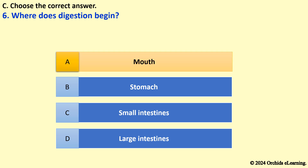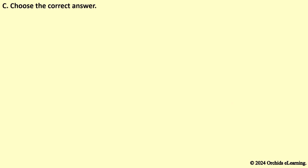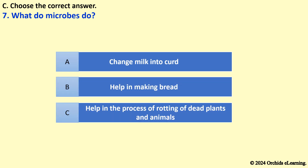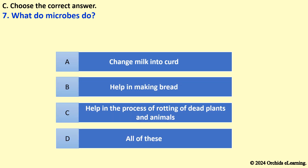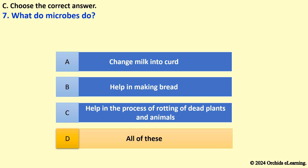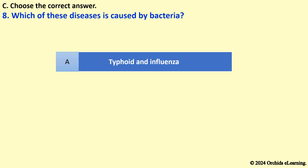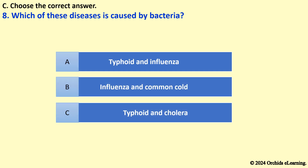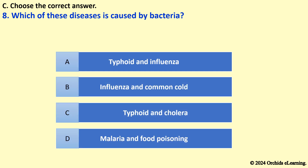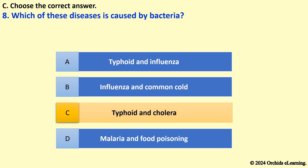What do microbes do? The answer is B/D — All of these. Which of these diseases is caused by bacteria? The answer is C — Typhoid and Cholera.